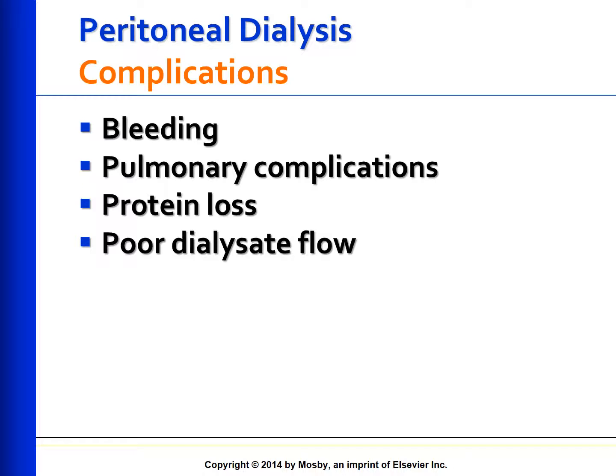Protein loss: The peritoneal membrane is permeable to plasma proteins, amino acids, and polypeptides. These substances are lost in the dialysate fluid; the amount of protein loss is usually about 0.5 grams per liter of dialysate drainage, but can be as high as 10 to 20 grams per day, and as much as 40 grams per day during episodes of peritonitis, which can result in malnutrition. Poor dialysate flow is usually related to constipation; a bowel preparation, high-fiber diet, and stool softeners can prevent this.